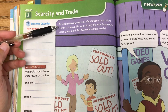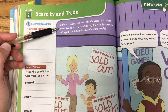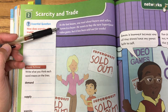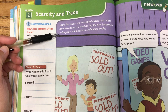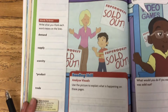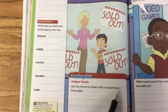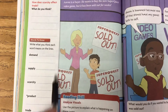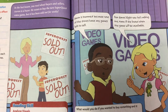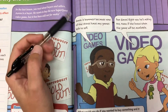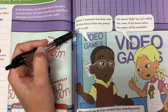In the last lesson, you read about buyers and sellers. Aaron is a buyer. He wants to buy the new SuperQuest video game, but it has been sold out for weeks. So look at the illustration here and then use the picture to explain what is happening on these pages. Aaron is bummed because none of the stores have any games left to sell.